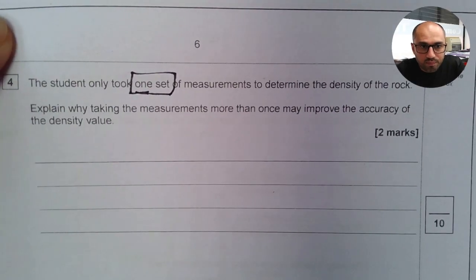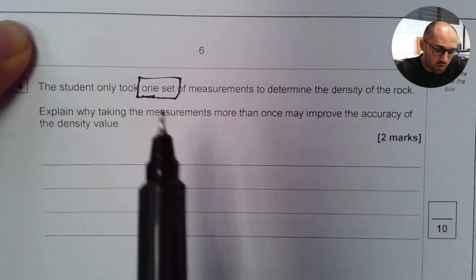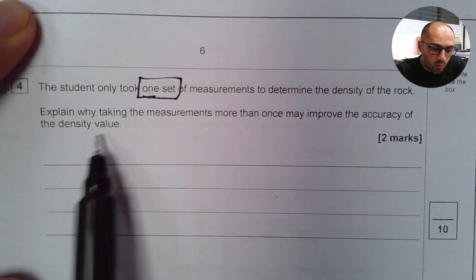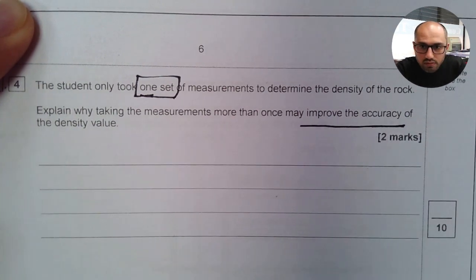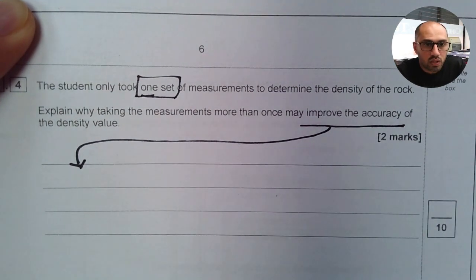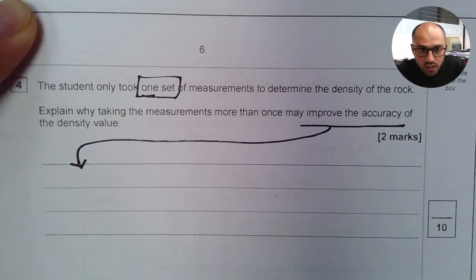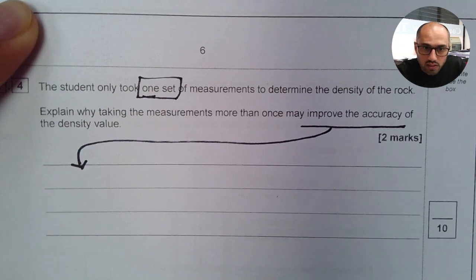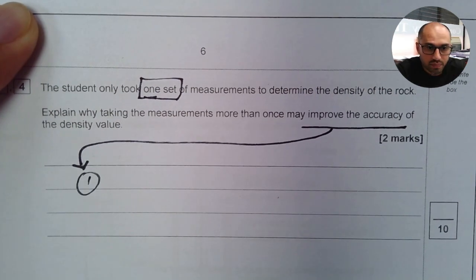Last part of this question says the student only took one set of measurements to determine the density of the rock. So this one set is of key importance here. It says explain why taking a measurement more than once may improve the accuracy of the density value. Now when you talk about the accuracy, if you do it only once and if you've made an error while recording a value, what will happen? Your final value of the density will not be correct. So if you repeat it or if you do it more than once, then there is a good chance that if you've made an error, it can be eliminated. So we can say here anomalies can be removed.